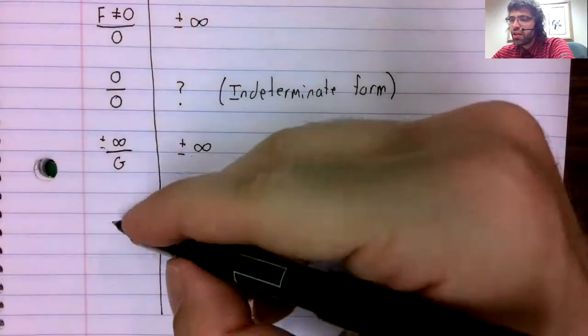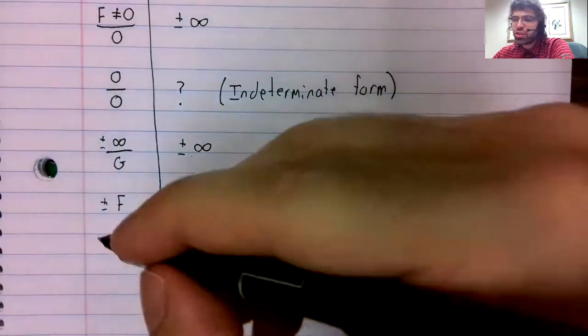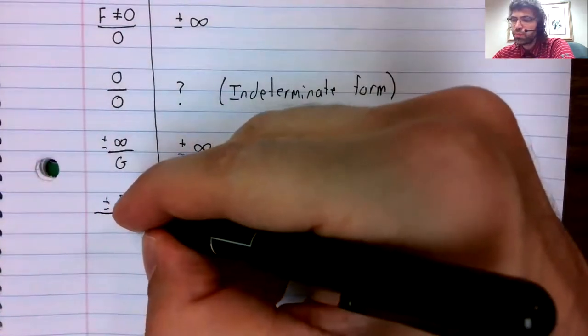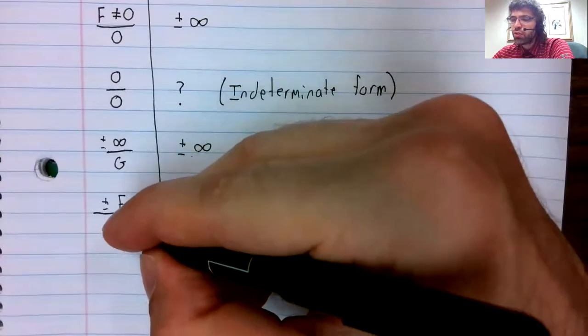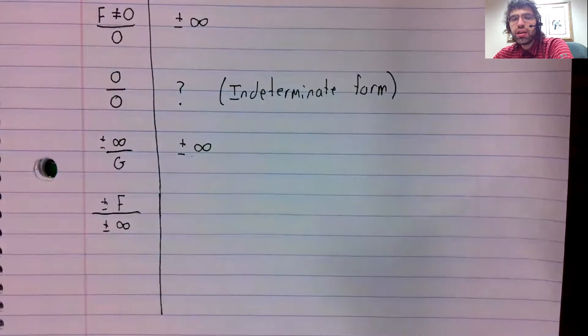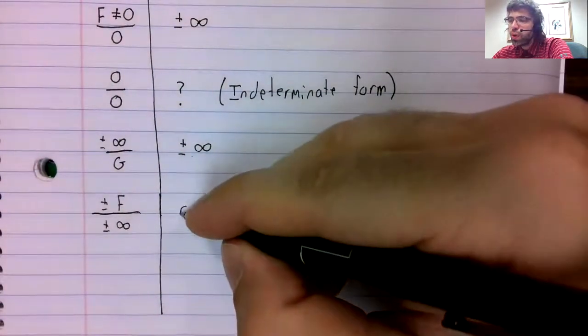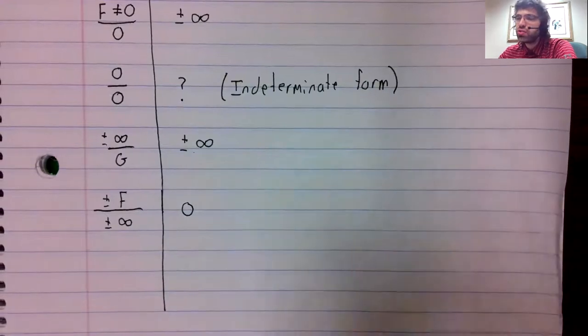If the numerator is going to a finite number but the denominator is going to infinity, this quotient is going to zero.